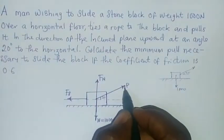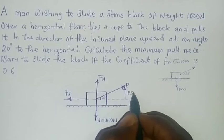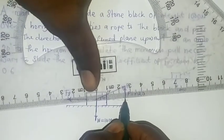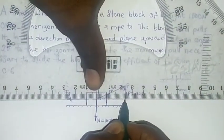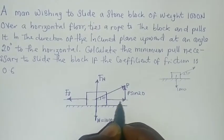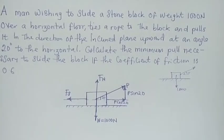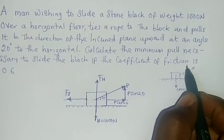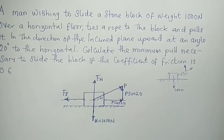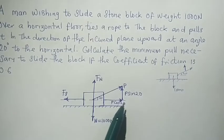So this will be going upward here and I will call it P sine 20, and this will come in this direction like this and I'm going to call this P cos 20. I've resolved it into vertical and horizontal components.